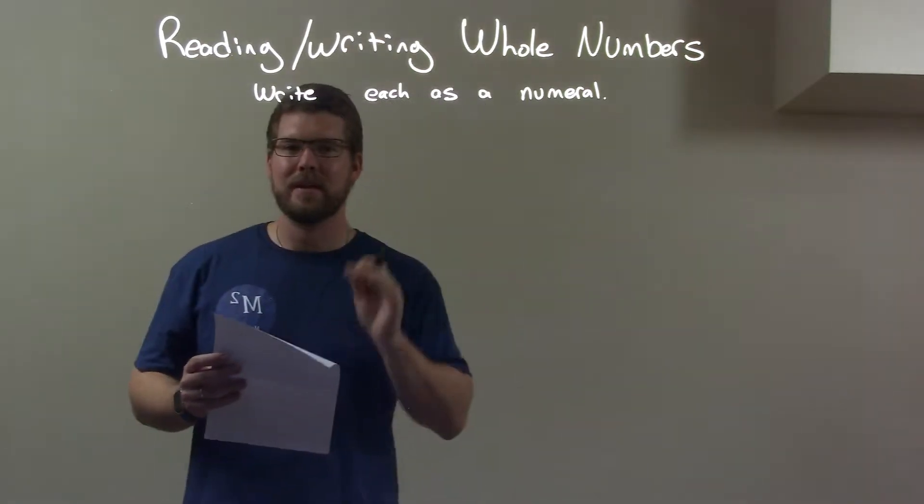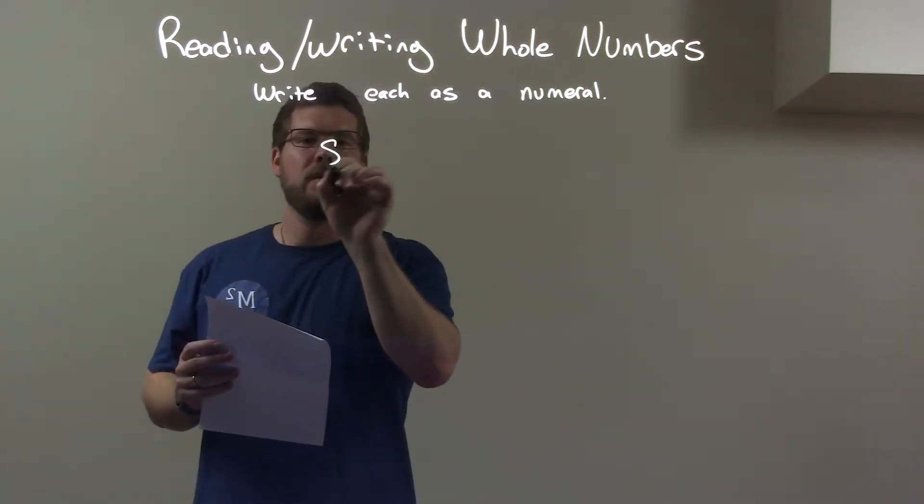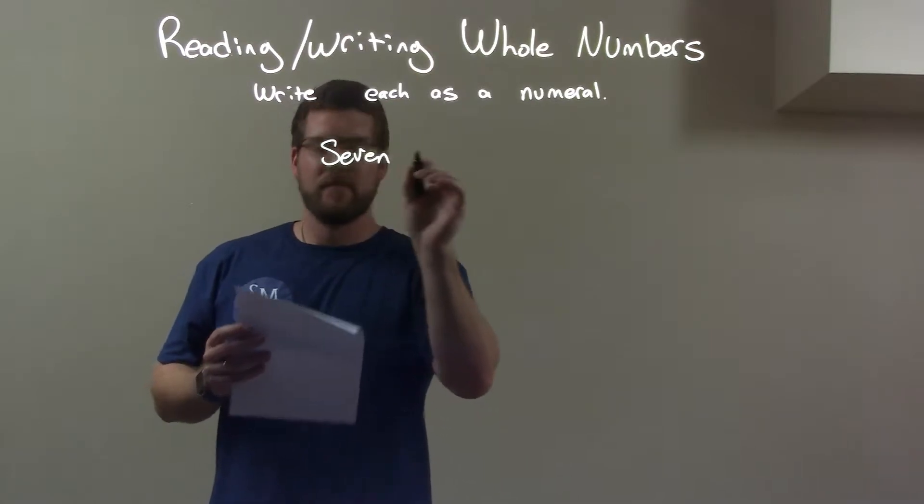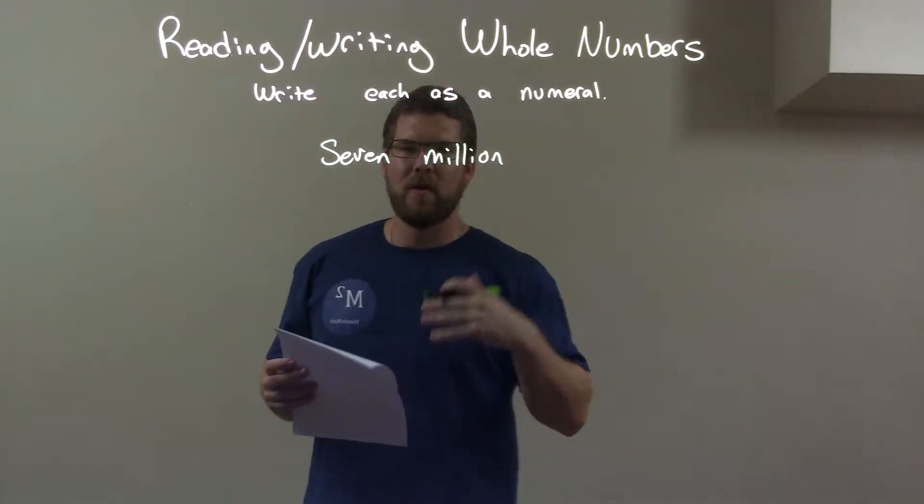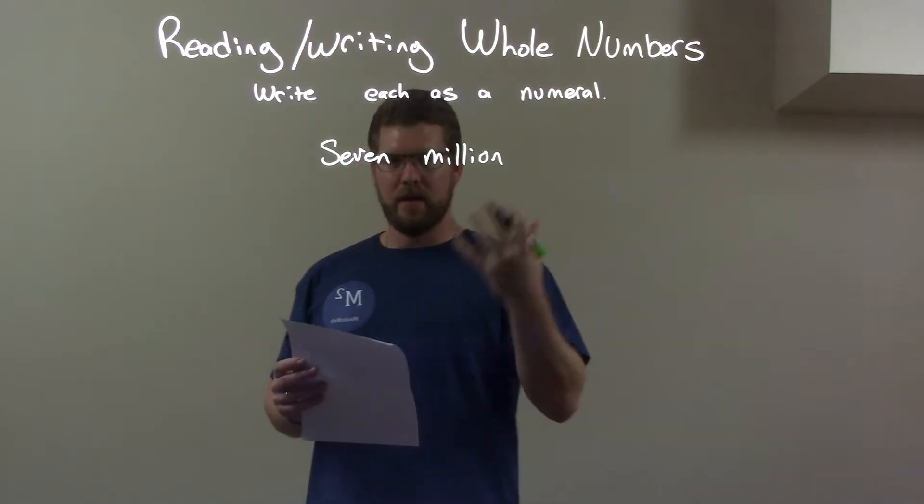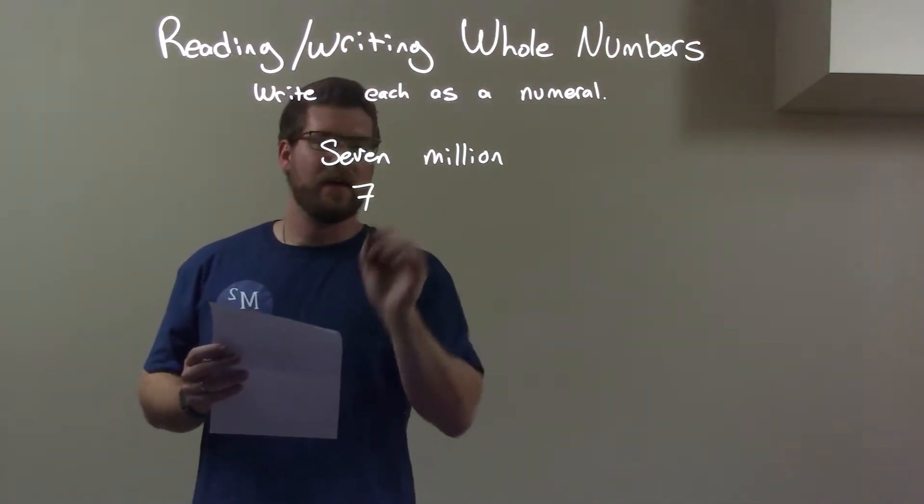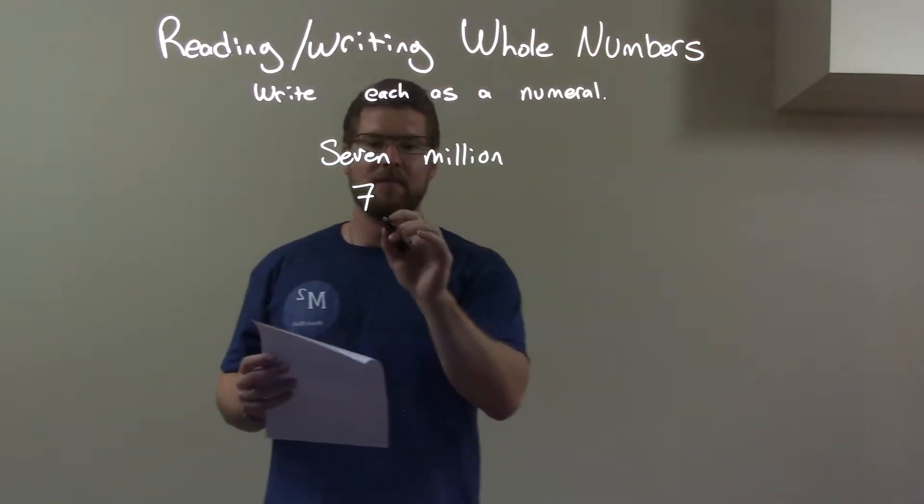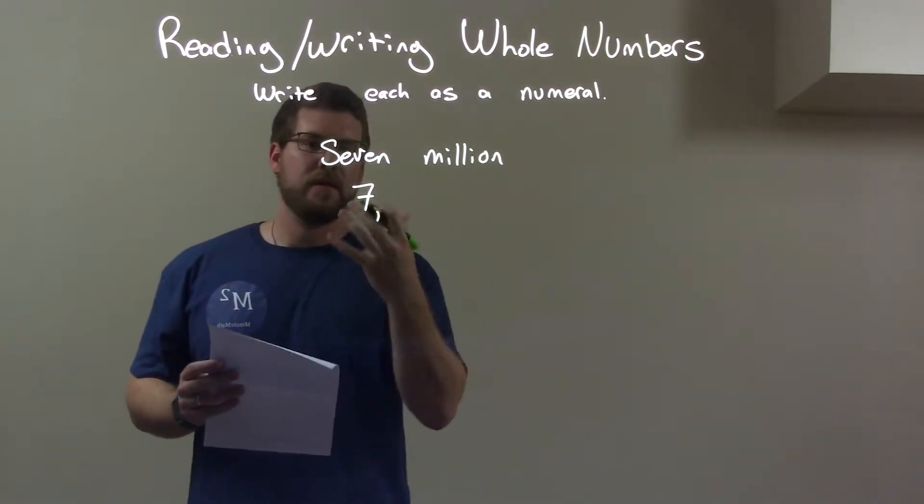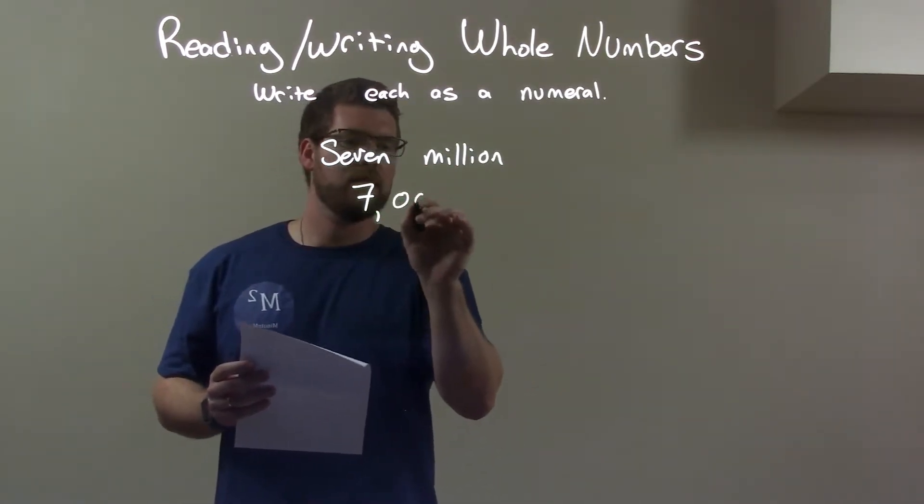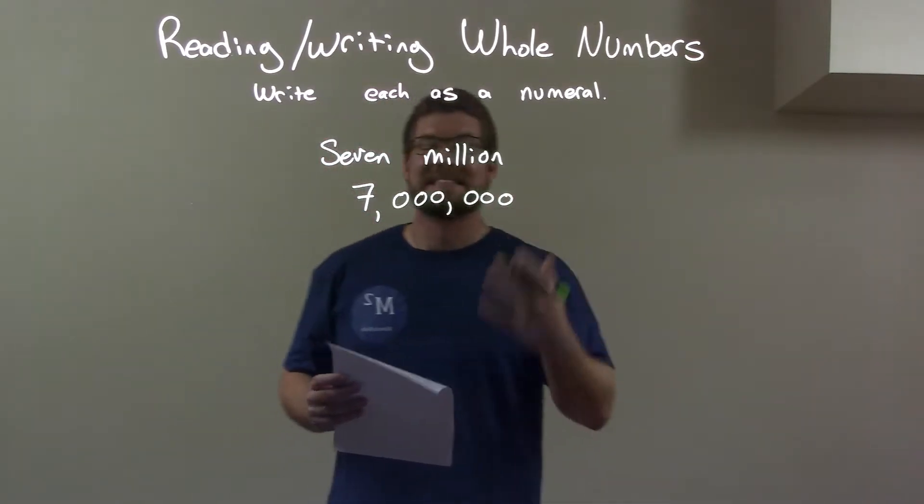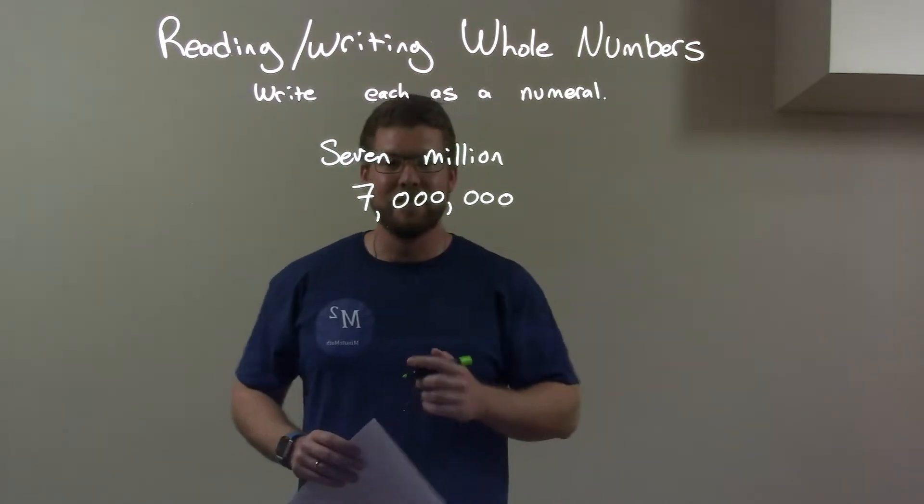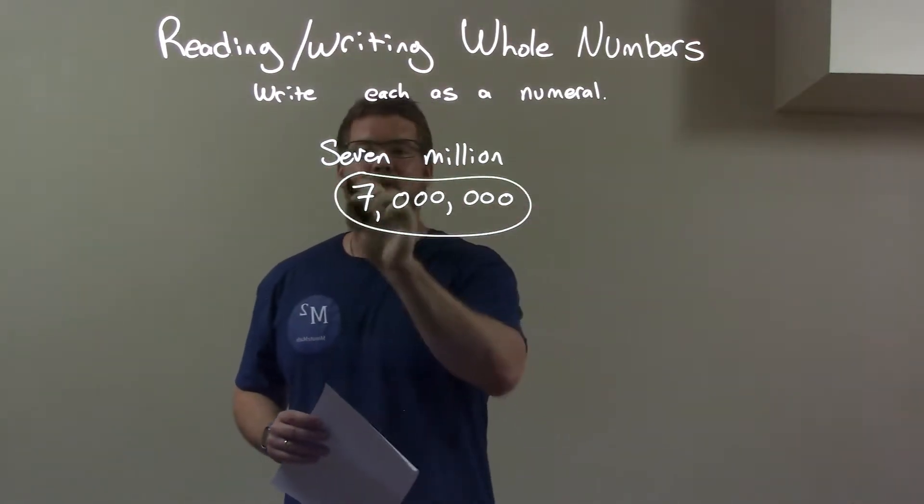So if I was given this number, seven million. So if I want to write that as a number, put a 7 down first, and then we have a million afterwards. So 7's in the millions place, and then we have 1, 2, 3, 1, 2, 3. So we've got a total of 6 zeros there, and that's it. Here's our final answer. Pretty simple.